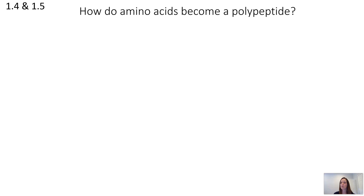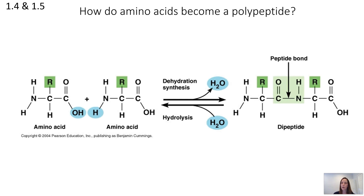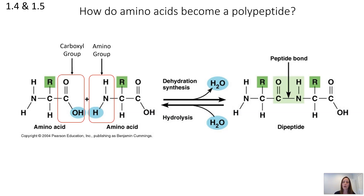Now that we know about the building blocks of proteins — the monomers or amino acids — how do they become a polypeptide? Just like in all other macromolecules, the process is dehydration synthesis. Two amino acids connect with dehydration synthesis to form a dipeptide — a covalent bond joins them, so we go from two molecules to one. In the case of proteins, it's the carboxyl group of one amino acid that bonds to the amino group of another — the OH from the carboxyl group and the H from the amino group come out to form water.